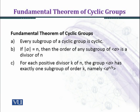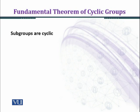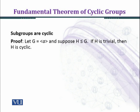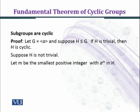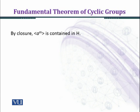Now we prove Part A: subgroups are cyclic. Let g be a group generated by a, and suppose h is some subgroup of g. If h is trivial, then we are done — h would be the cyclic group generated by the singleton {e}. Suppose h is not trivial. Let m be the smallest positive integer with a raised to the power m in h. Does such m exist? The answer is yes, by the well-ordering property.